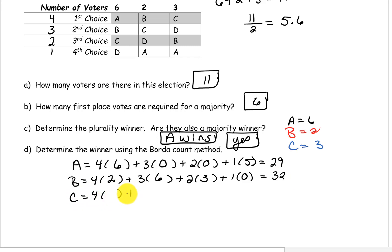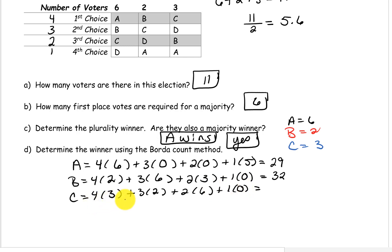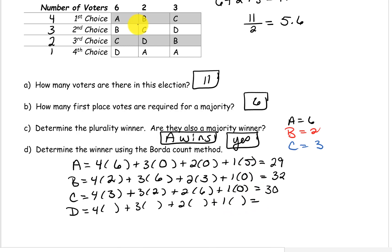For candidate C: they were 1st choice on 3 ballots, 2nd choice on 2 ballots, 3rd choice on 6 ballots, and last choice on 0 ballots. So we have 4 times 3, and we can calculate their total. For candidate D: they were 1st choice on 0 ballots, 2nd choice on 3 ballots, 3rd choice on 2 ballots, and last choice on 6 ballots. So we have 4 times 0, plus 3 times 3, plus 2 times 2, plus 1 times 6, giving a total of 19 points.